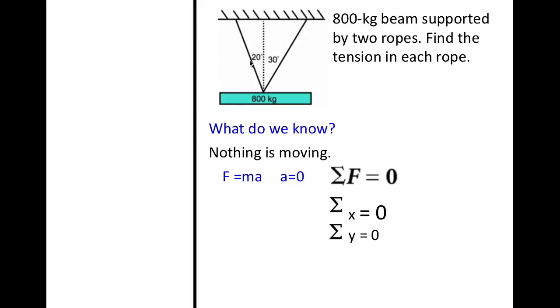So here is the first rope. The second rope is right here. Each with a specific angle if you were to make a 90 degree angle. All holding up this beam right here, which is 800 kilograms.